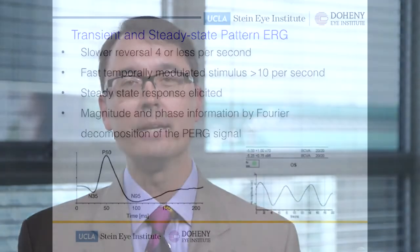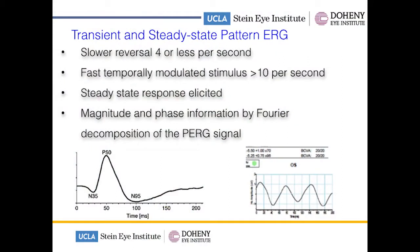I want to introduce you to the topic with this first slide where we discuss both transient and steady-state pattern ERG. Pattern ERG is what we use for glaucoma detection and progression. What you can see here is a description of the transient, which is what you may be more used to with normal laboratory-based electrophysiology.